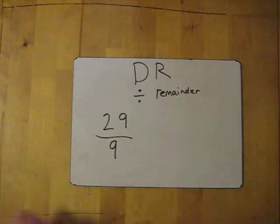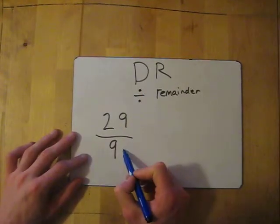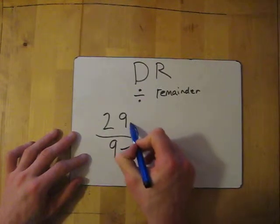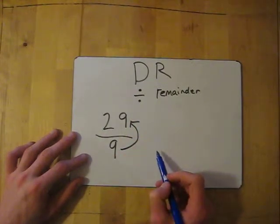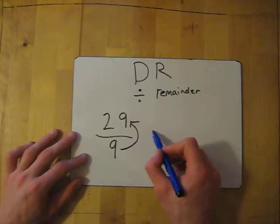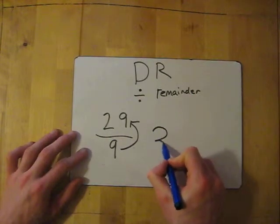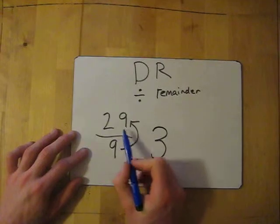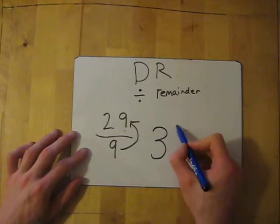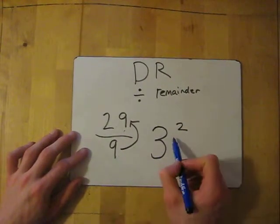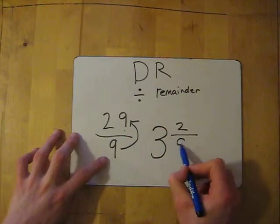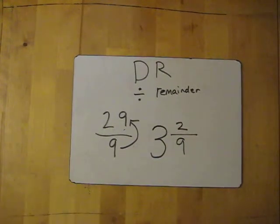We divide, then find the remainder. 9 into 29 gives me 3, which would be 27. So it's 3 wholes, and I've got 2 left over as a remainder. The 2 becomes the top part of the fraction, the denominator stays the same, and that's how you do it.